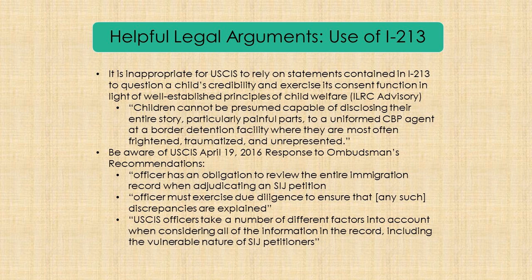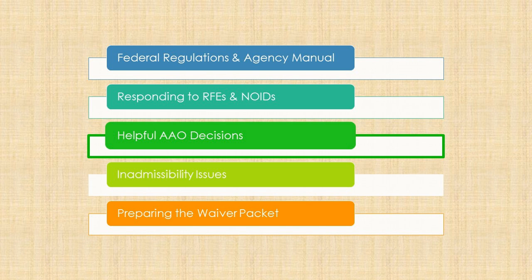We've covered the regulations, agency guidance, and how to respond to RFEs and NOIDs as a practical matter. Now let's review a few AAO decisions. None of these decisions are precedent decisions — as far as I'm aware, there aren't really precedent decisions on SIJS. But the decisions are helpful as they may inform how you frame your responses and even how you frame your state court actions. This is by no means meant to be a comprehensive review of all relevant decisions — there are many.